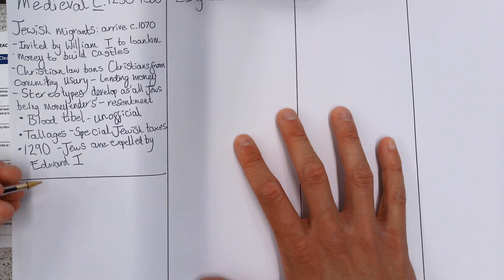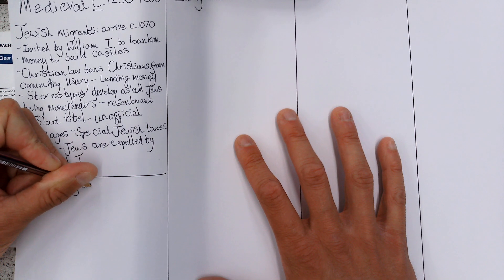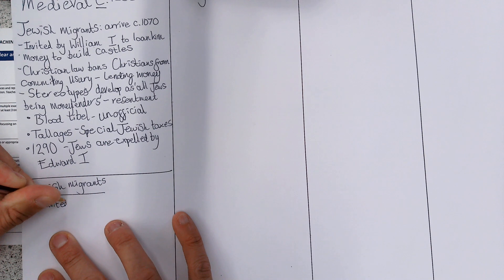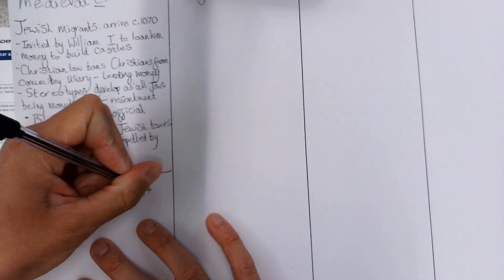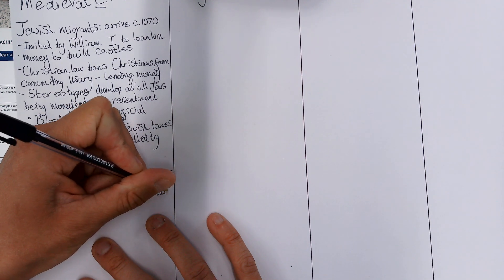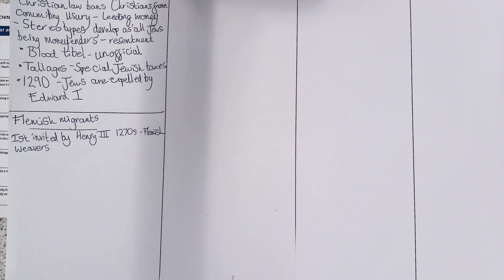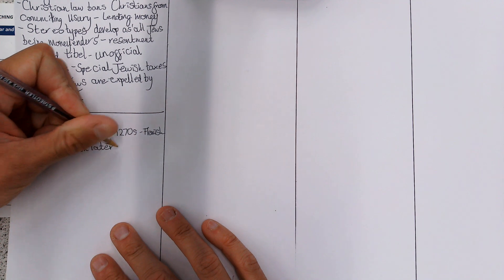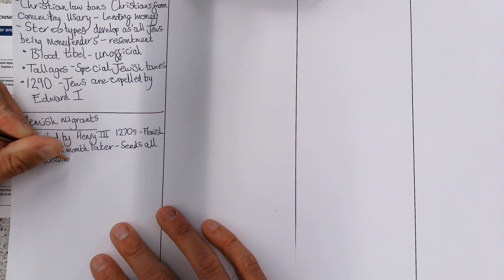The other group I'd probably focus on — because they're easy to remember and there's perhaps less to remember — is Flemish migrants. Flemish migrants are first invited by Henry III in the 1270s, but he only invites Flemish weavers. That's really important, because lots of Flemings — people from Flanders — who aren't weavers also come, so one month later he actually sends all non-weaving Flemish migrants home.